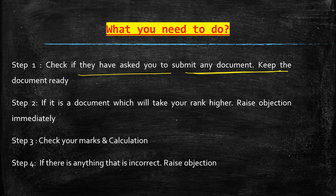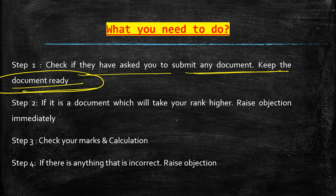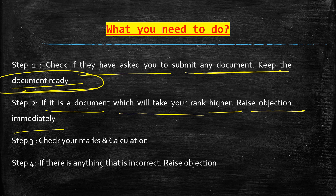Step 1: Check if they have asked you to submit any document — keep it ready. On the right side of the list there is a column indicating required documents. If a document needs to be submitted online, submit it; if at counseling, bring it. Step 2: If there is a document that will raise your rank — for example PU weightage eligibility — raise an objection immediately.